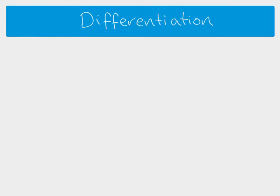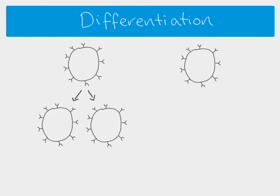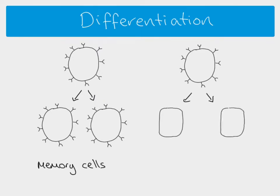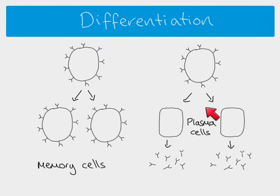The next stage is differentiation. We've got our identical cells, and some of them will become memory cells while some will differentiate and become plasma cells. Those plasma cells release antibodies — thousands and thousands every second. These plasma cells don't last very long; they're most active when the number of pathogens in the body is at its highest, and after a few weeks the number of plasma cells and therefore antibodies will decrease.